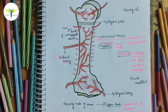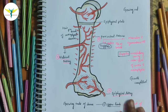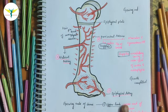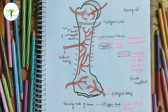Coming to the epiphyseal arteries — these are derived from the periarticular vascular plexuses found on the non-articular bone surface. They supply the epiphyseal plates at the growing ends of the bone.